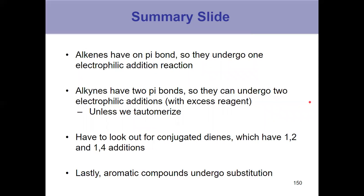A quick summary slide for what's a very big chapter. This does not cover everything. It's just a brief summary. Alkenes have a single pi bond. So they undergo one electrophilic addition reaction. That's chapter 6. Chapter 7 is where we got alkynes, which have two pi bonds, so they can undergo two electrophilic additions if you have excess reagent, unless you do a tautomerization, a keto-enol tautomerization.